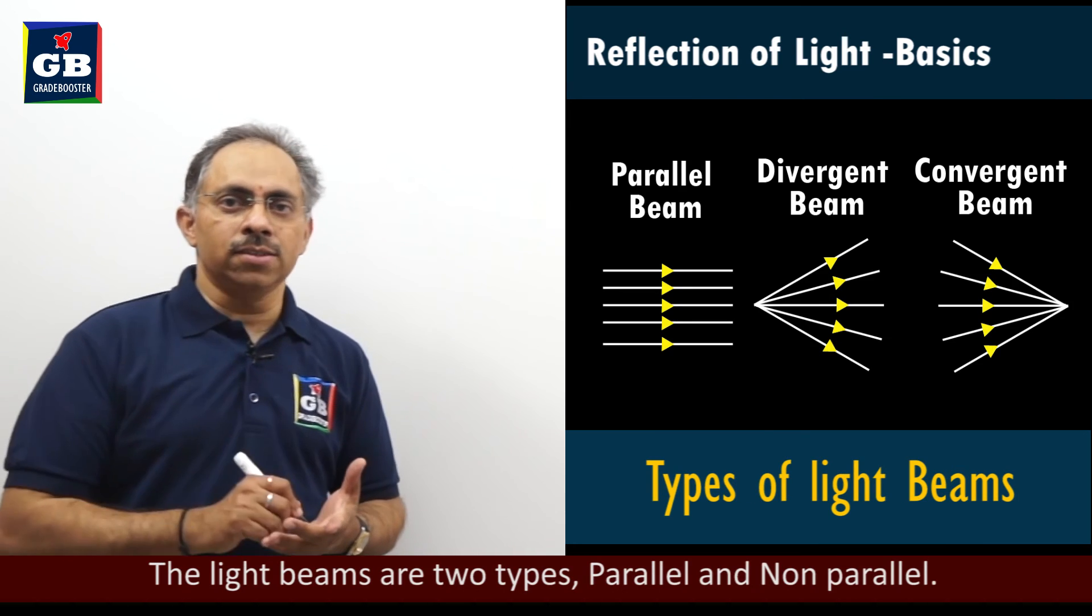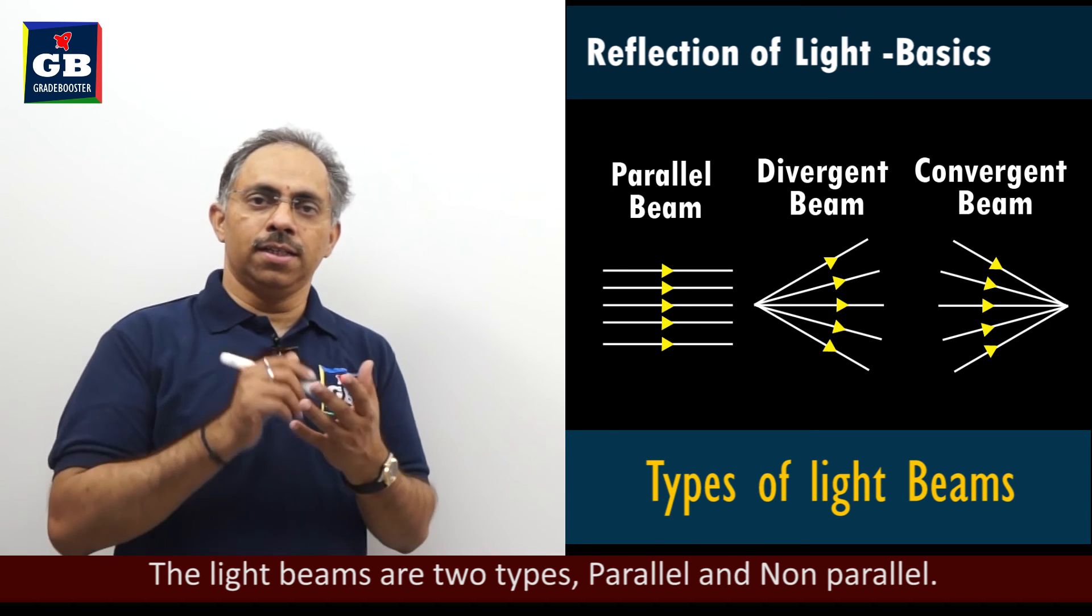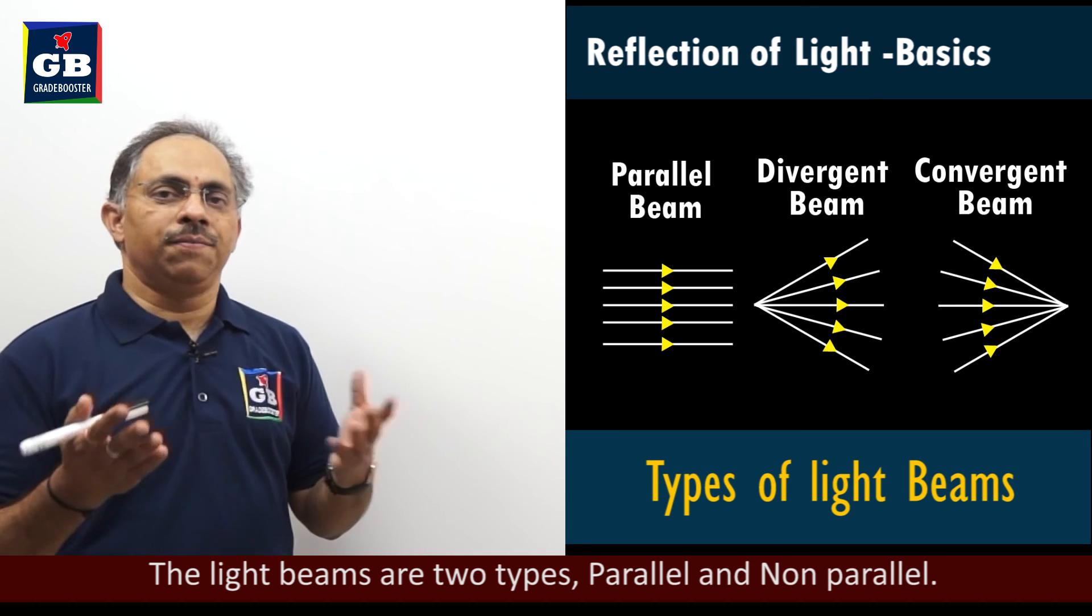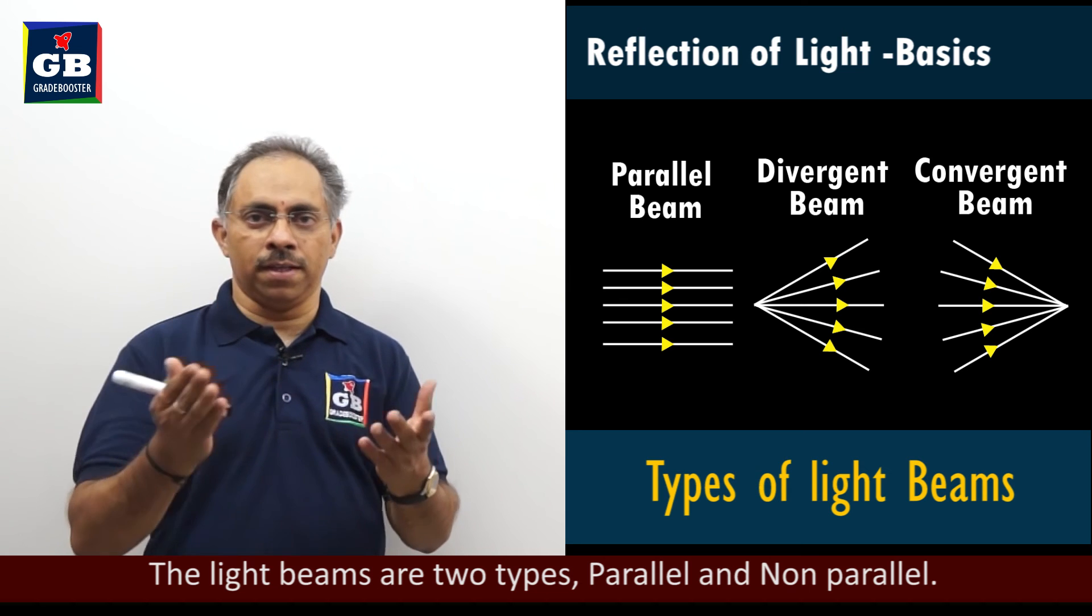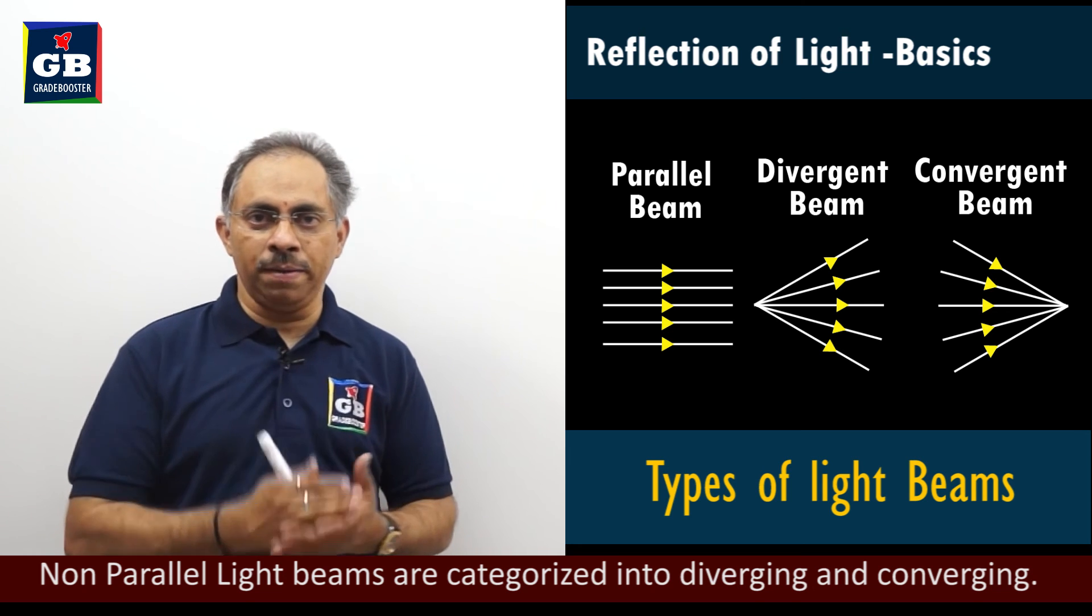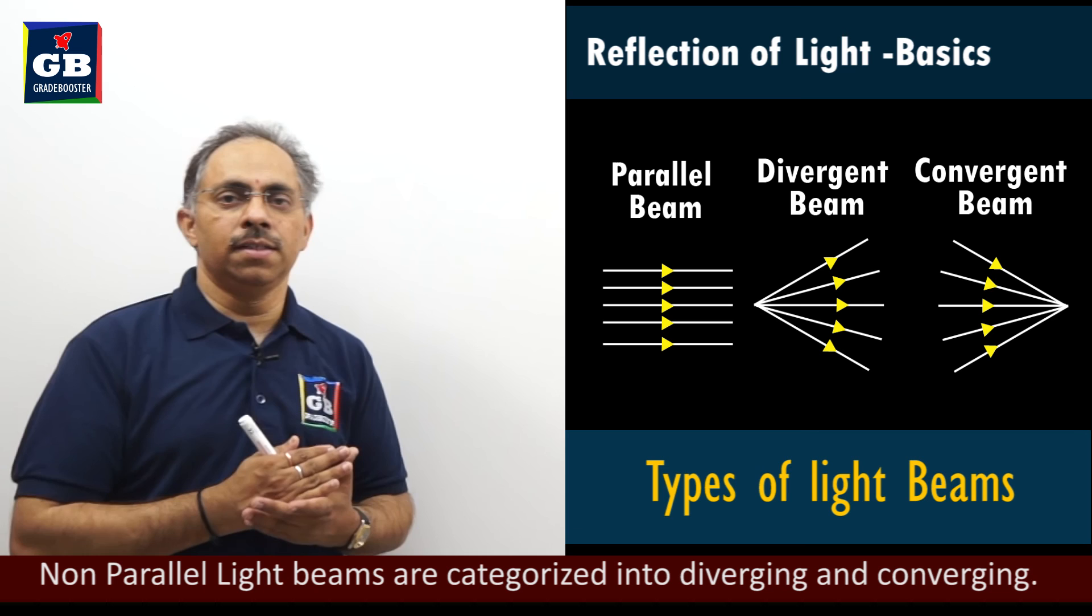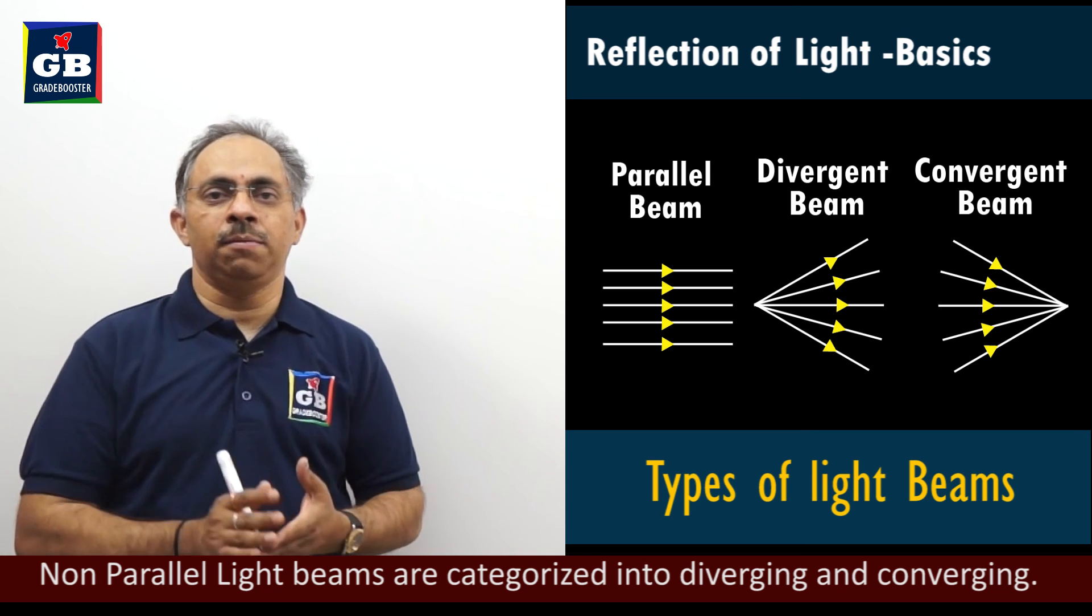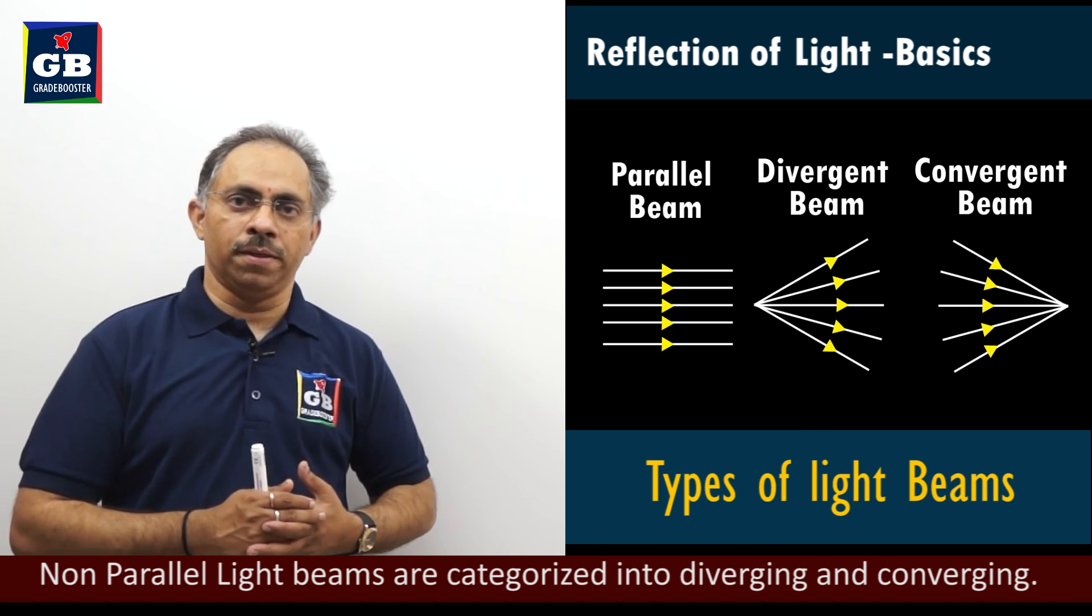So after getting through the different light sources, a pointed beam and a pointed source of light and an extended source of light, after knowing about the different types of rays, ray of light is nothing but the path along which the light travels. Then, we have a bunch of rays. We will call it as a beam, a parallel beam, a convergent beam, a divergent beam. Now, we need to understand what the basic phenomenon which helps and which is the essence of our topic that is reflection.